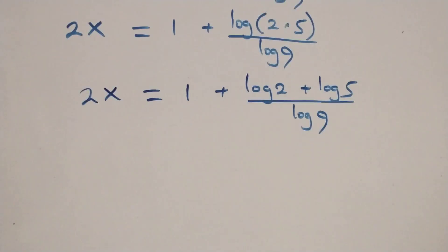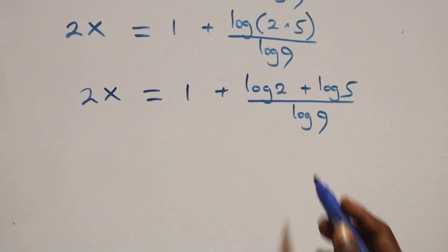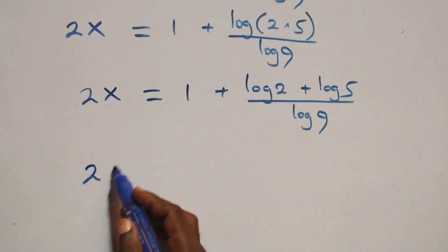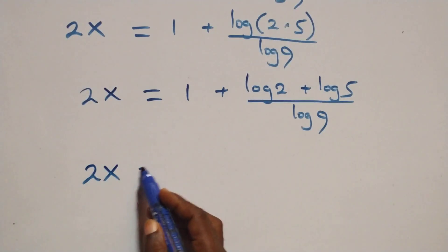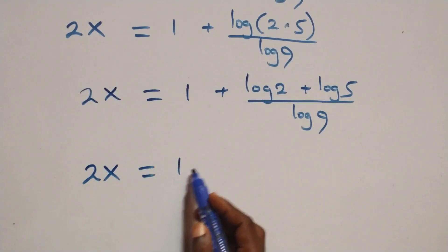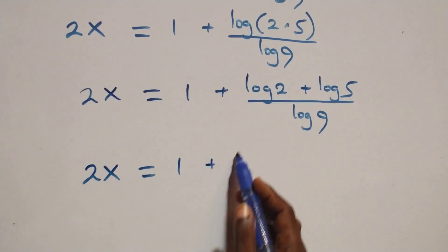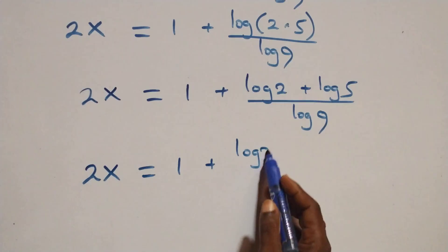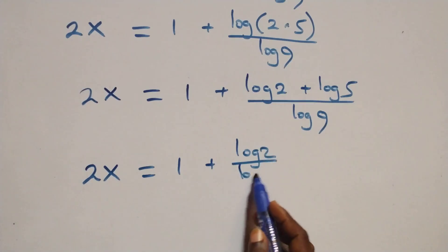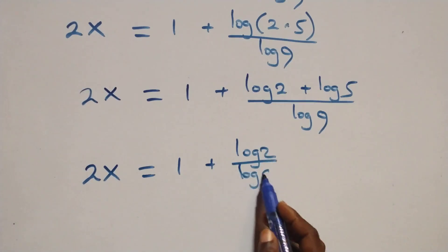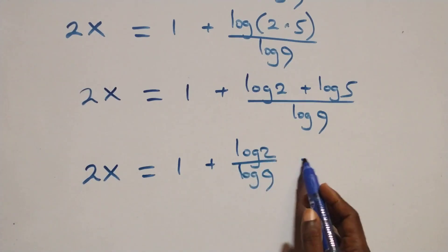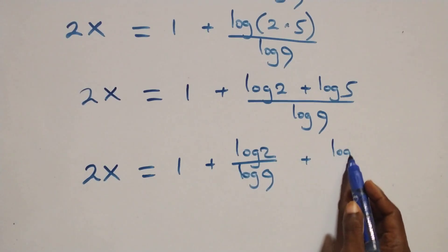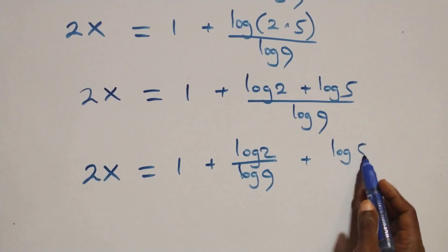We separate this into two fractions: 2x equals 1 plus log 2 over log 9 plus log 5 over log 9.